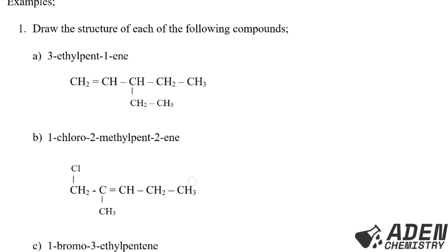We have the double bond on carbon number 2 — so carbon number 1, carbon number 2, the double bond is here. Then we have two attachments: one is chloro and the other is a methyl attachment. The chloro is on carbon number 1, so we put it here. The methyl attachment is on carbon number 2, so we place it here. Check each carbon's bonds. This carbon here has four bonds: one bonded to chlorine, one to hydrogen, and the fourth bond to this carbon.